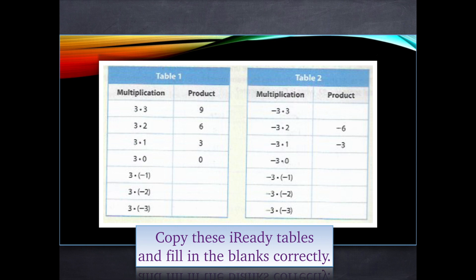So 3 times negative 1, if you need to, use your calculator, put the answer in there. 3 times negative 2, and 3 times negative 3. On the table 2 there, all of the first numbers in the multiplication are negative. So you will also be multiplying negative times negative on those bottom three problems.